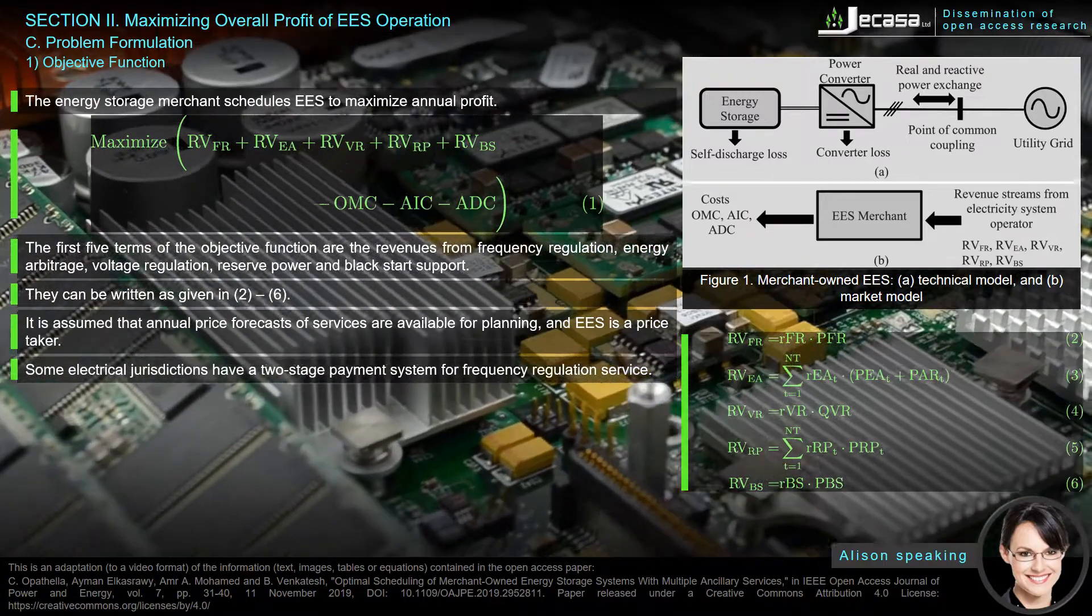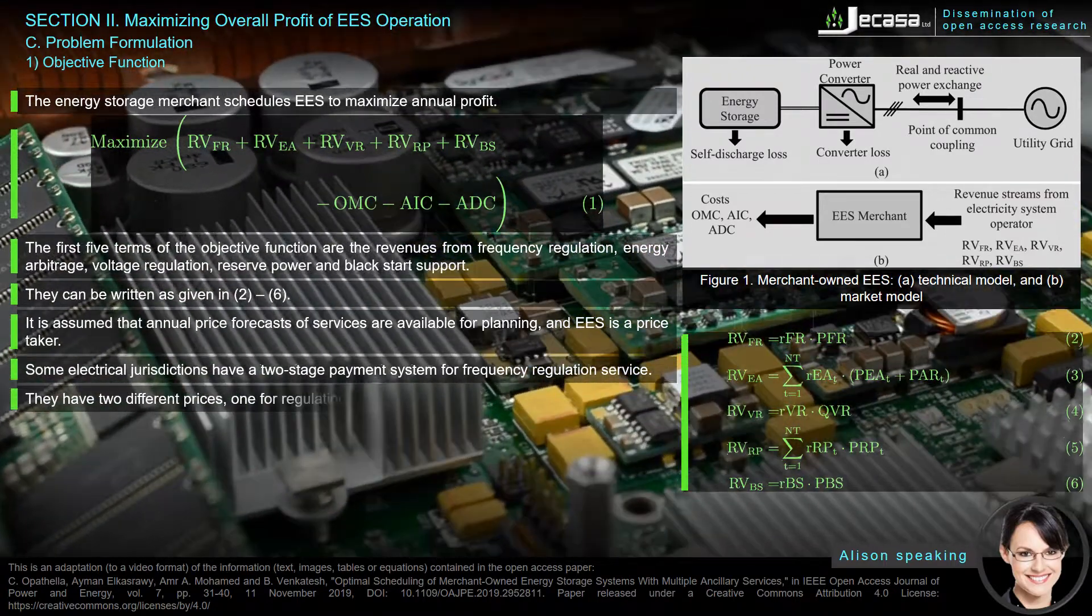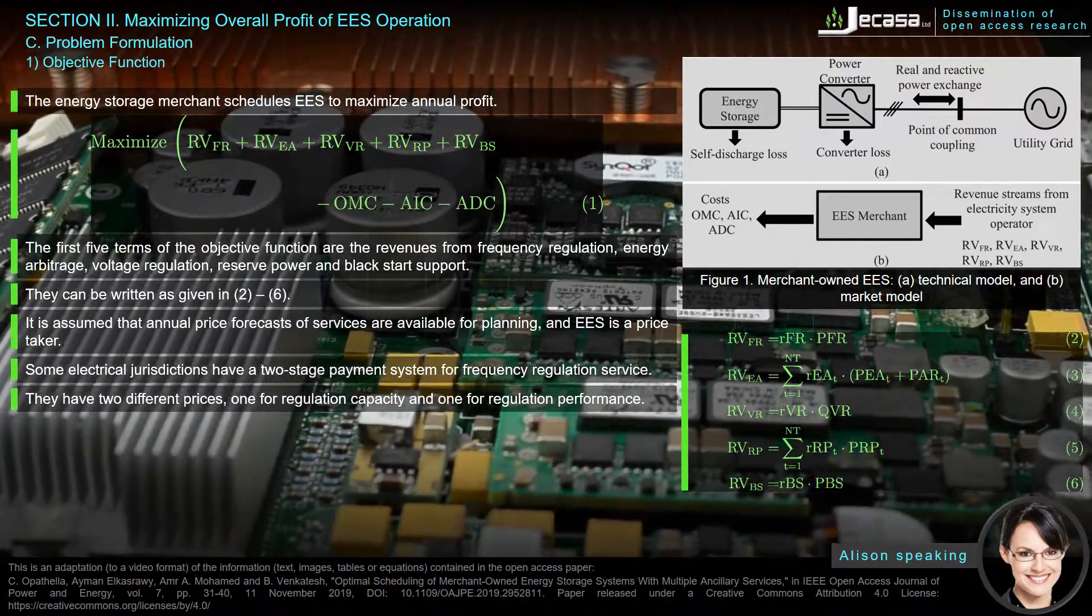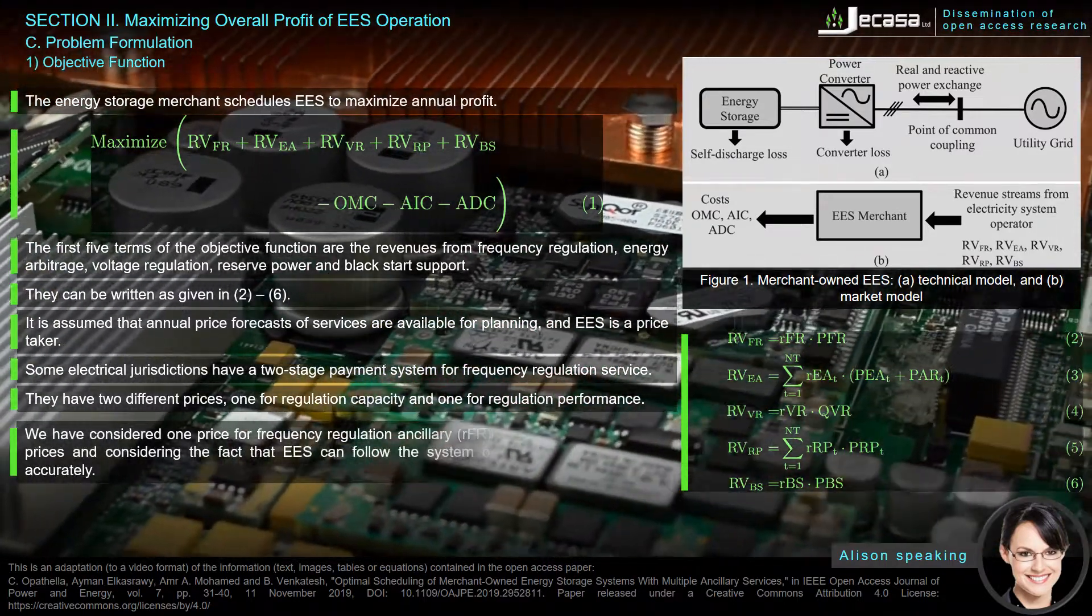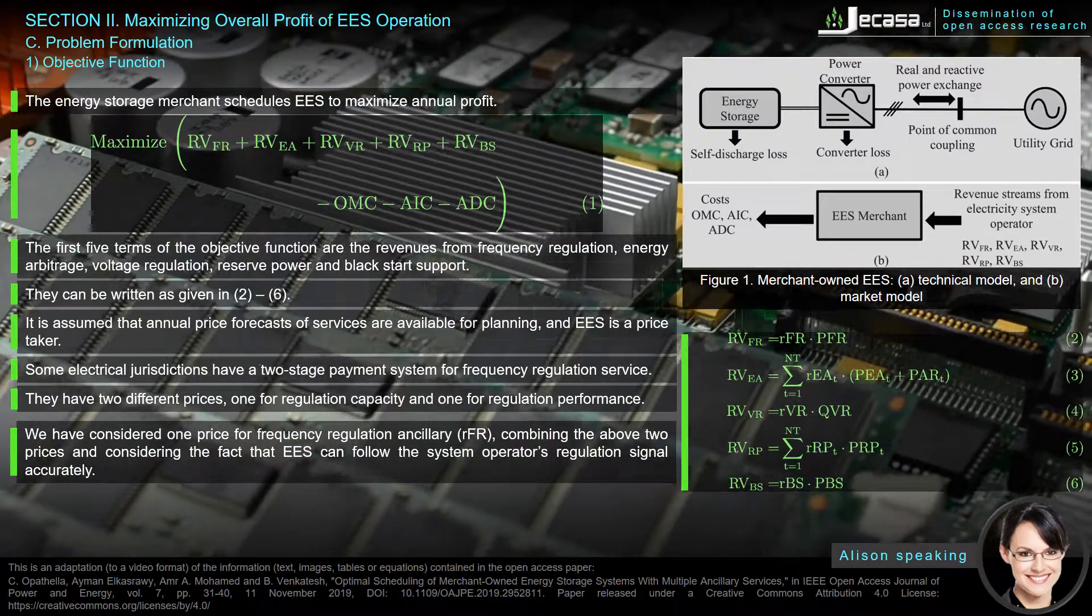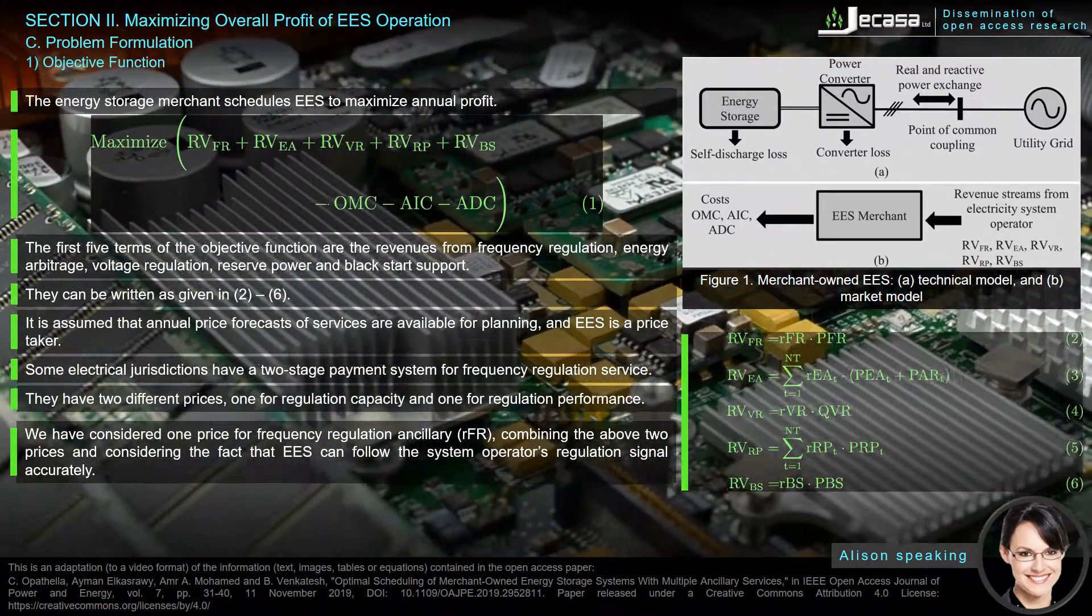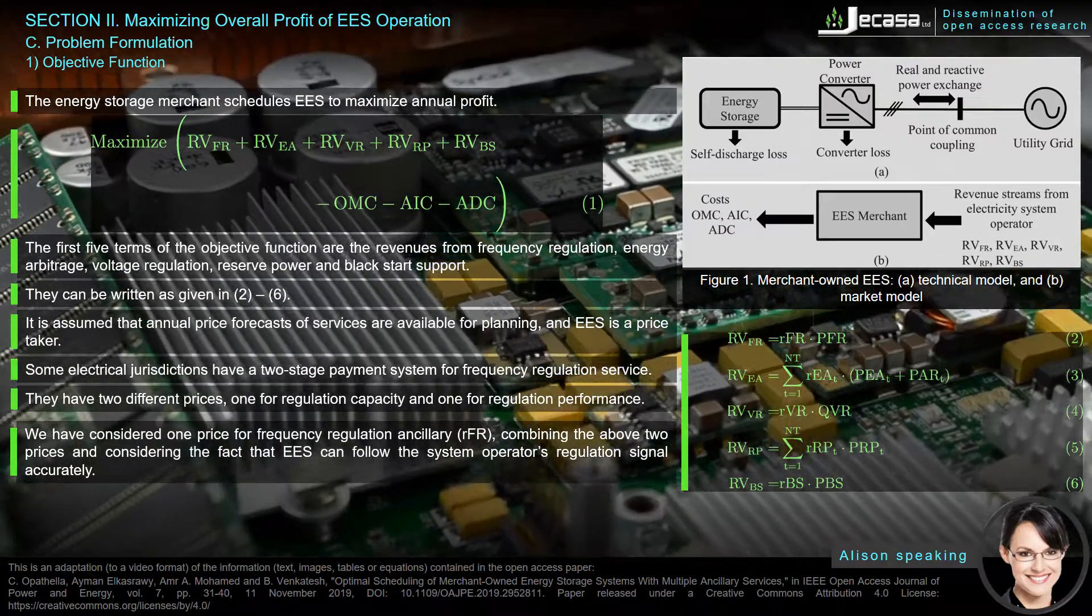Some electrical jurisdictions have a two-stage payment system for frequency regulation service. They have two different prices: one for regulation capacity and one for regulation performance. We have considered one price for frequency regulation ancillary (RFR), combining the above two prices and considering the fact that EES can follow the system operator's regulation signal accurately.